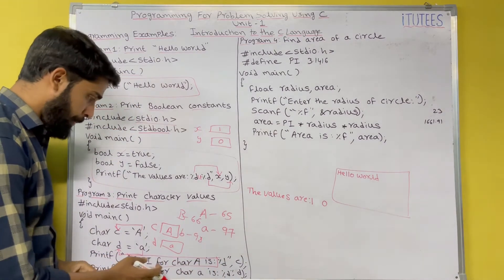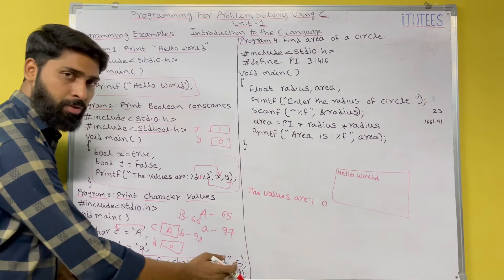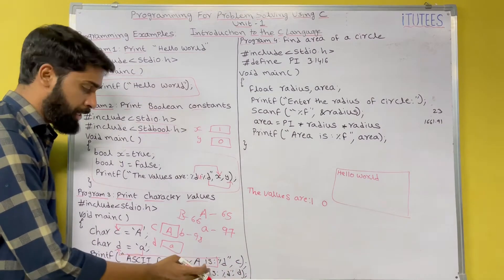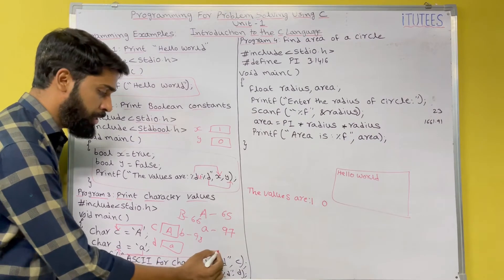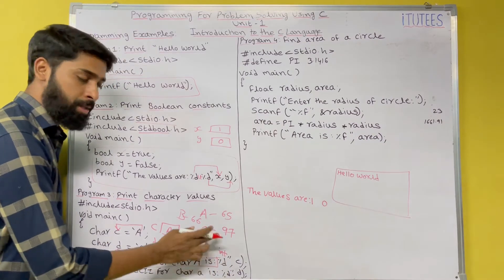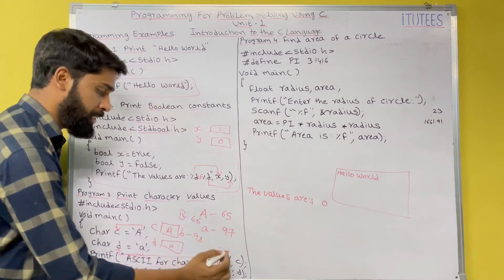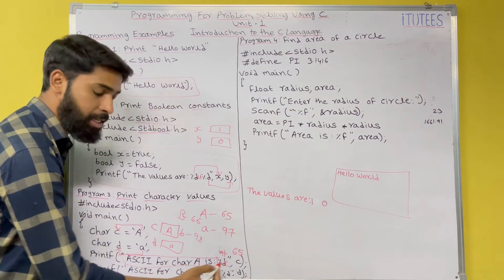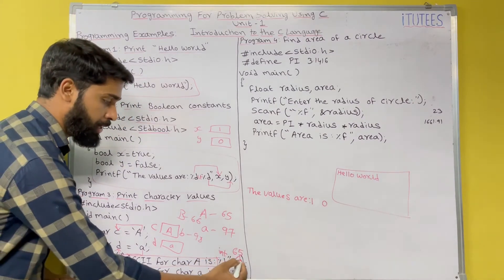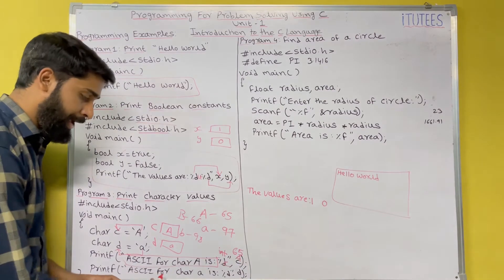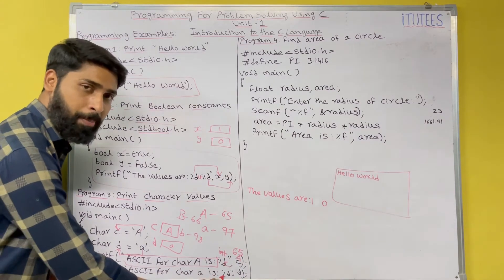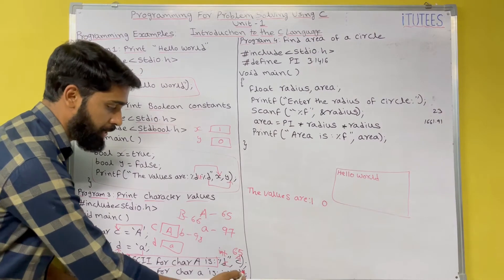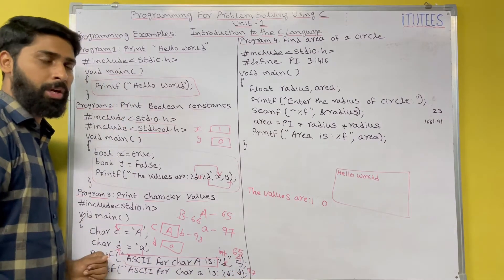ASCII for char a is. It print this message. After that, percentage d, c. What is the c? Character. But here we are using %d, control string belongs to int. So instead of a, it prints 65 here. If you are using the %c here, then it displays capital A. And similarly, ASCII for char a is %d int. It displays 97.